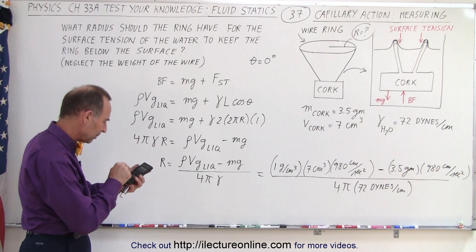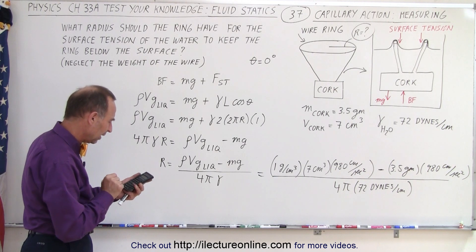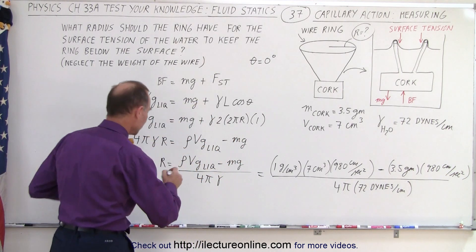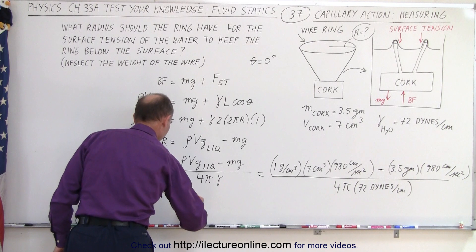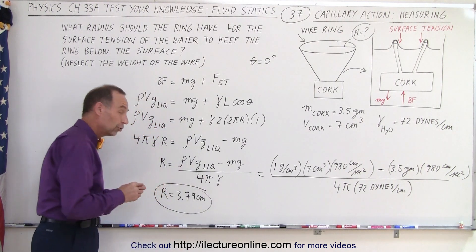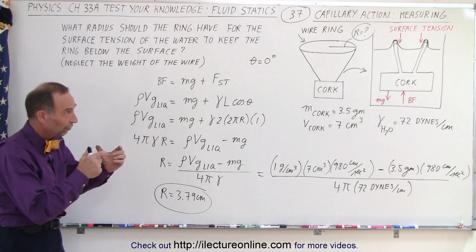...equals. That gives me 3.79 centimeters. So the radius equals 3.79 centimeters, and that radius will make the wire just big enough so that the surface tension will keep it from breaking through.